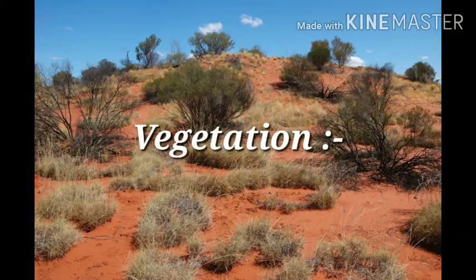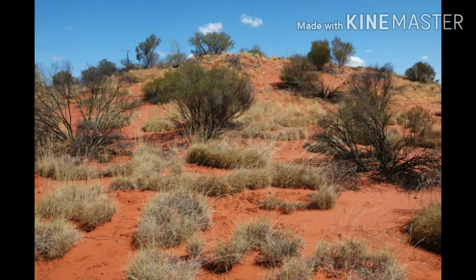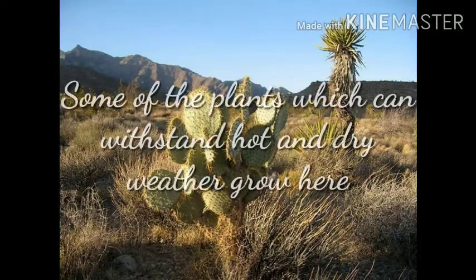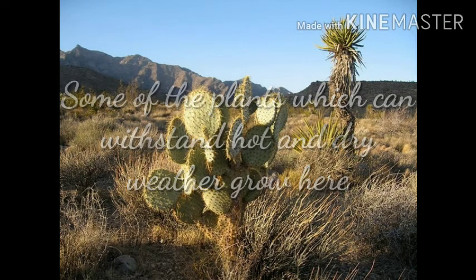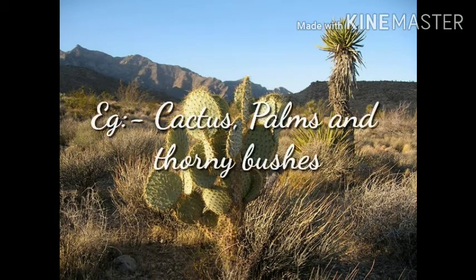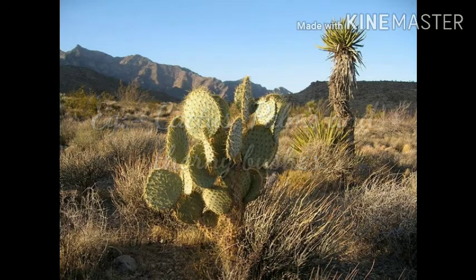Vegetation: very few plants are grown in deserts. The plants which can withstand the hot and dry conditions can be seen growing in the desert region. Examples include cactus, palms and thorny bushes.